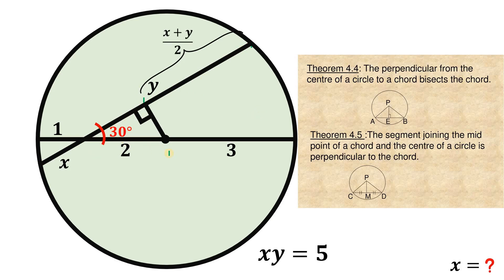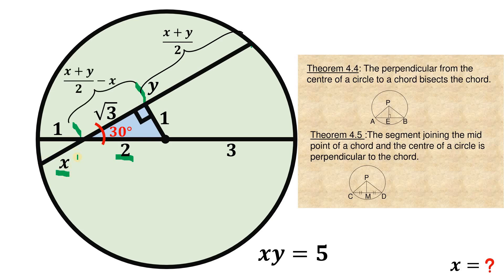Now let's focus on this right triangle in the middle part. We know the hypotenuse is 2, and this is a 30-60-90 right triangle. So if the hypotenuse is 2, the length of the side opposite the 30 degrees is half of the hypotenuse, or simply half of 2 is 1. And the side opposite the 60 degrees is 1 times square root of 3, or simply square root of 3. Now this segment is square root of 3, but we can also rewrite this segment in terms of X and Y as (X plus Y) over 2 minus X. So X plus Y over 2 minus X is the same thing as square root of 3, and we can equate them.